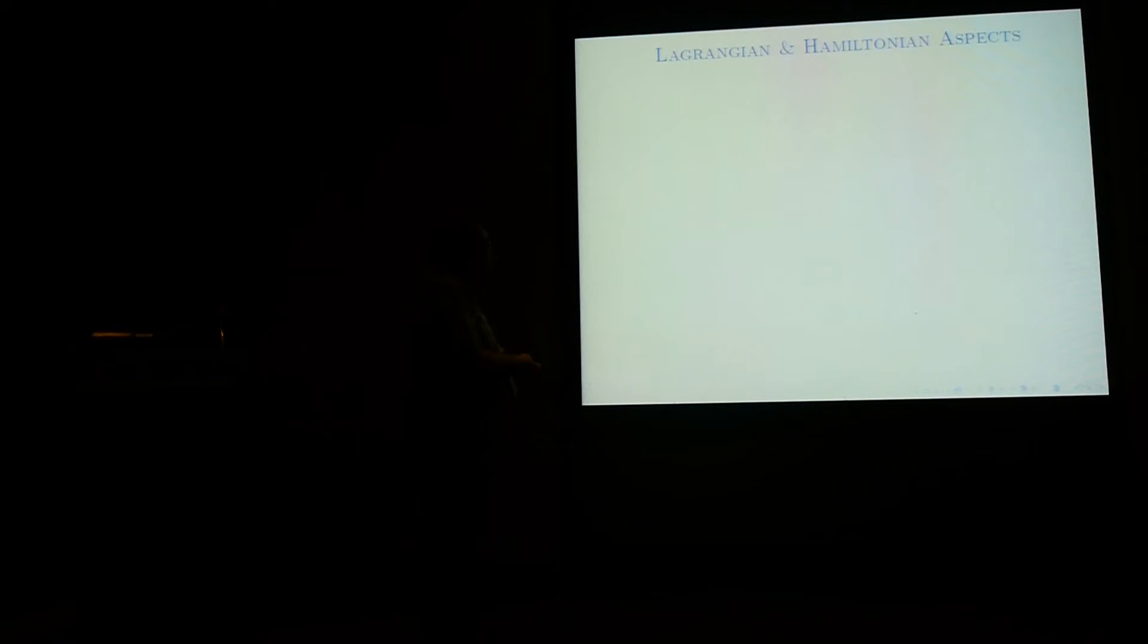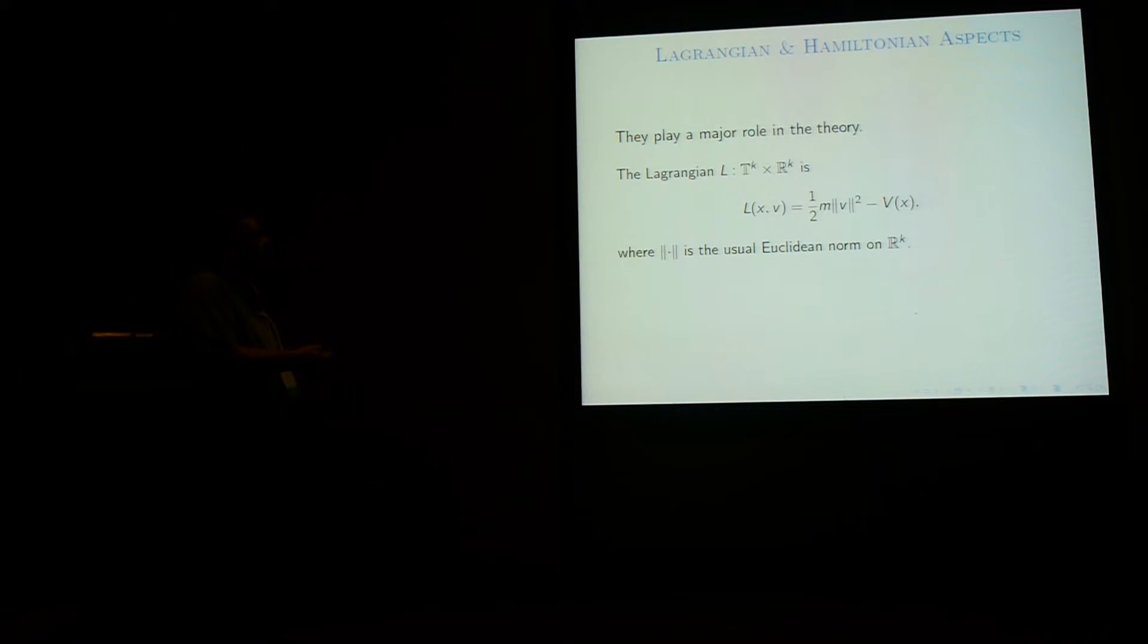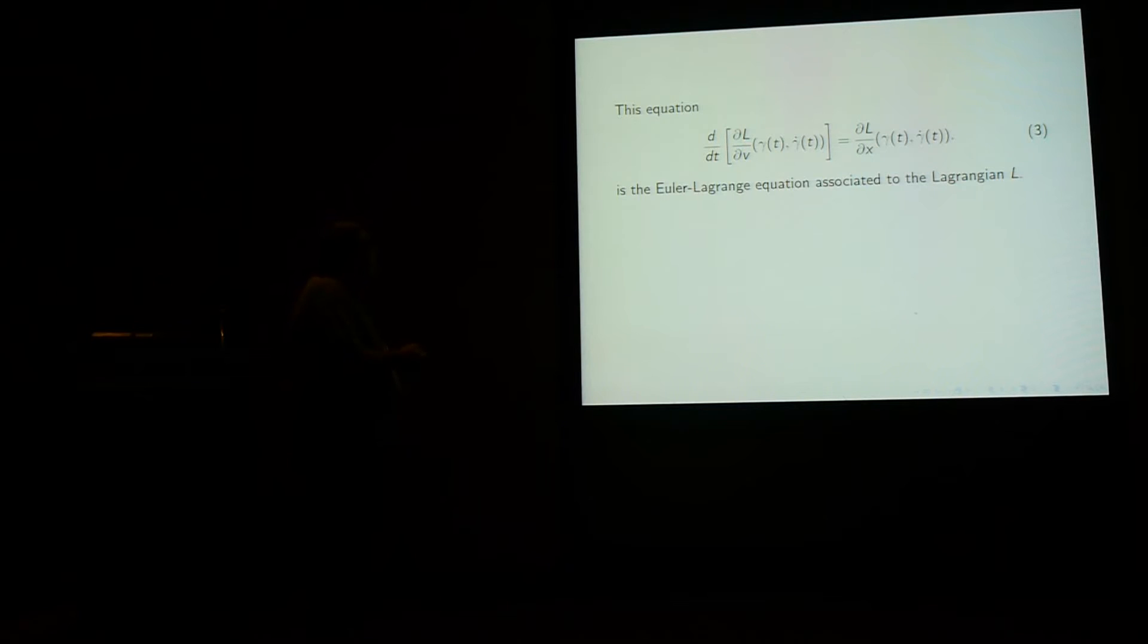So now I come to the Lagrangian and Hamiltonian aspects, because they are going to play a major role in the theory. So this is what it's all about. So the Lagrangian, classically, is defined as kinetic energy minus the potential. So L of xv is one-half of Mv squared minus V(x). This is just the usual equation. Now if you just use the Lagrangian and perform the computation, the Newton equation takes the following form. And therefore if you have another Lagrangian, you can also define Newton's equation. So this equation, in fact, is the Euler-Lagrange equation associated to the Lagrangian L.